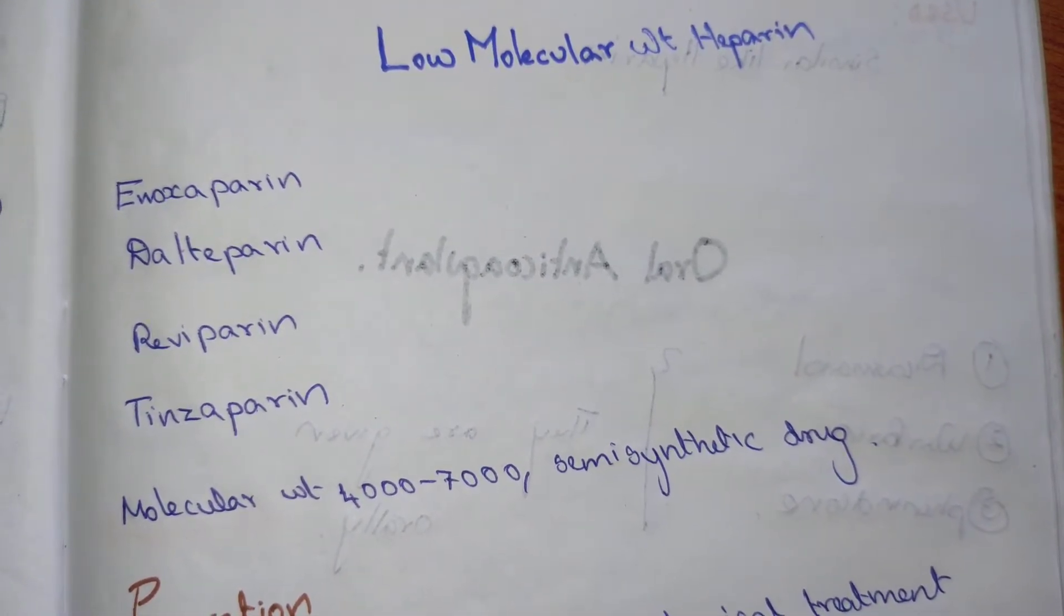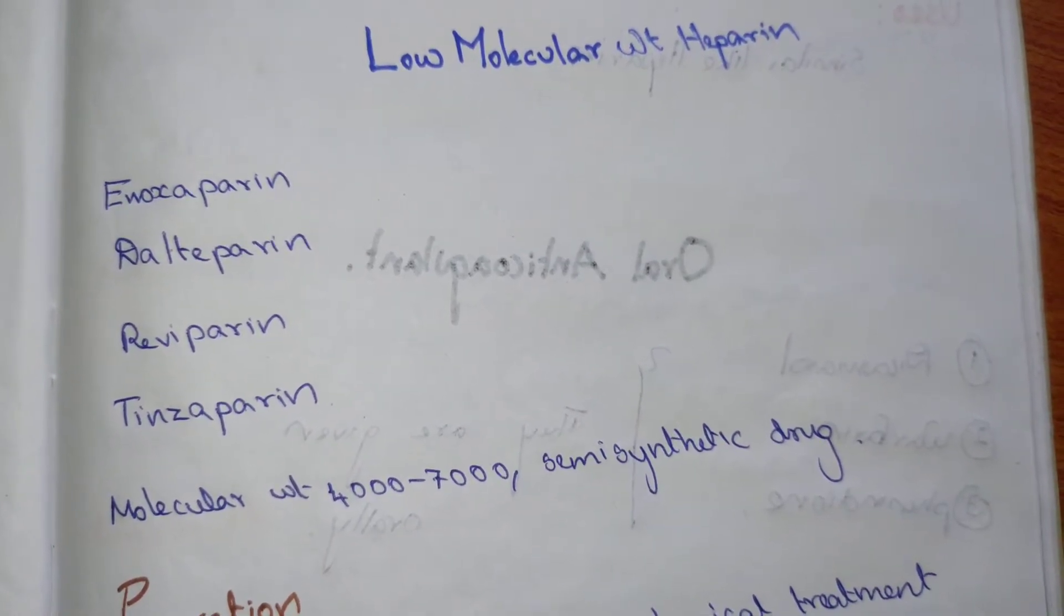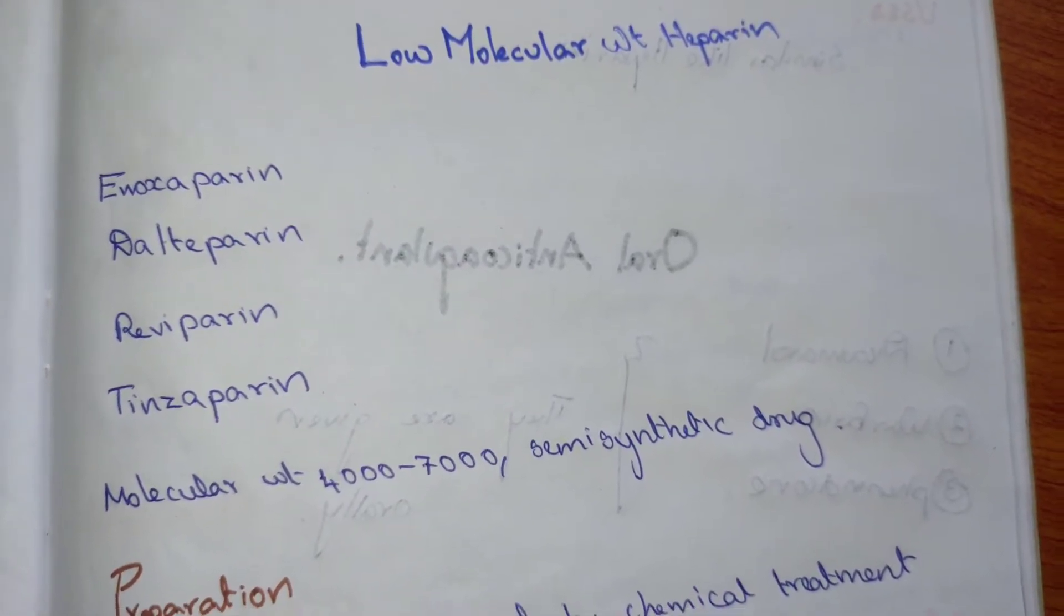Dalteparin, reviparin, and tinzaparin - these are low molecular weight heparins. Their molecular weight is less than heparin, which is 4000 to 7000.